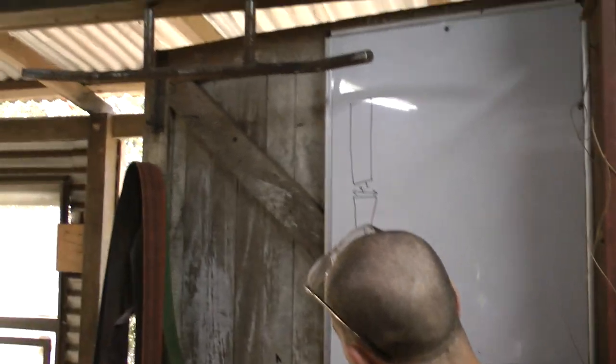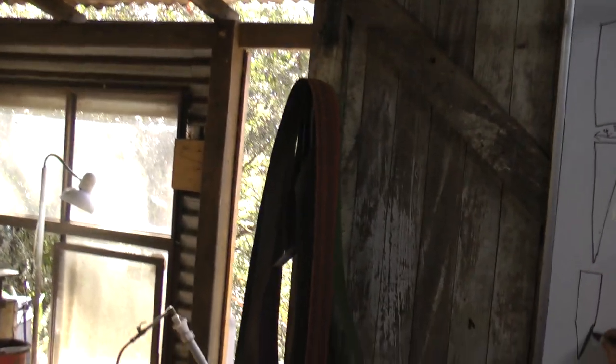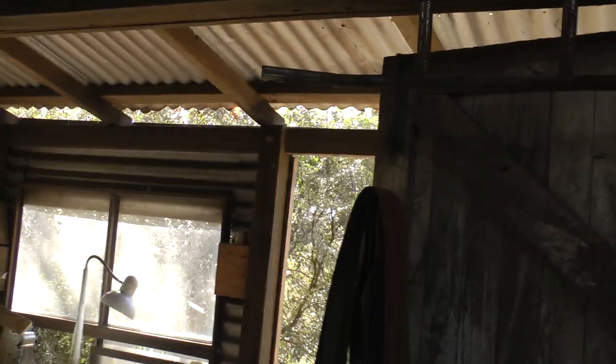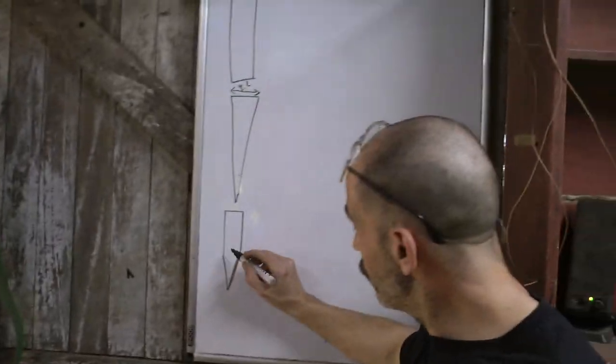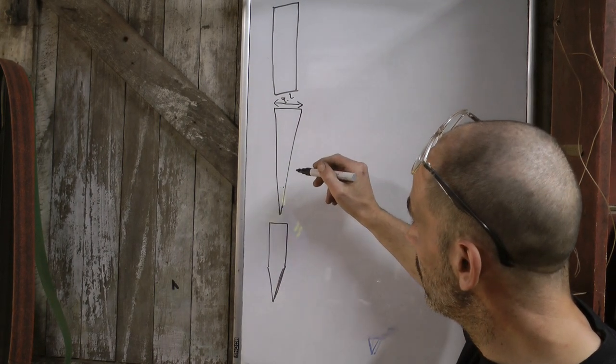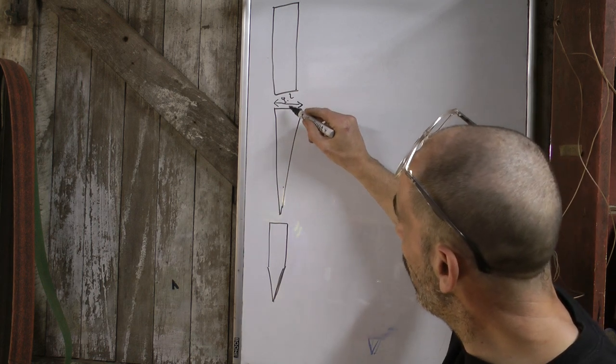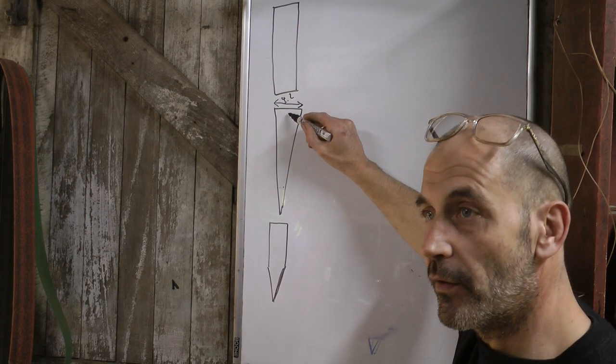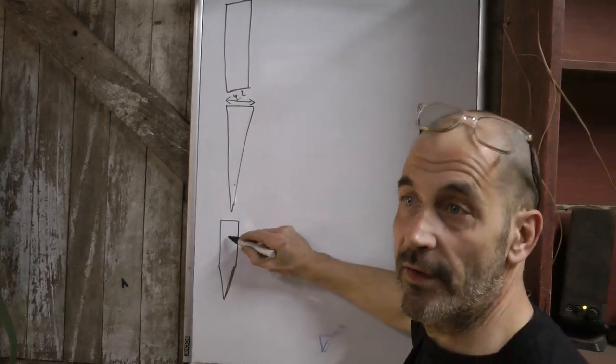Or you could go with another type of blade geometry, which is what we call a saber grind, when you only grind a bevel on a portion of your blade. Which makes the blade a lot stronger, but you do lose a bit of slicing ability. On my knives, I might go for this on thick blades, but I might go with that on thinner blades. That will make the blade quite stronger.